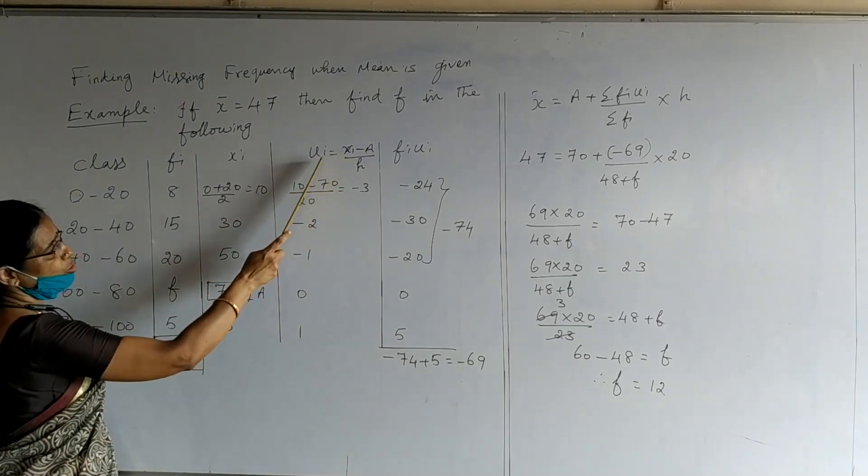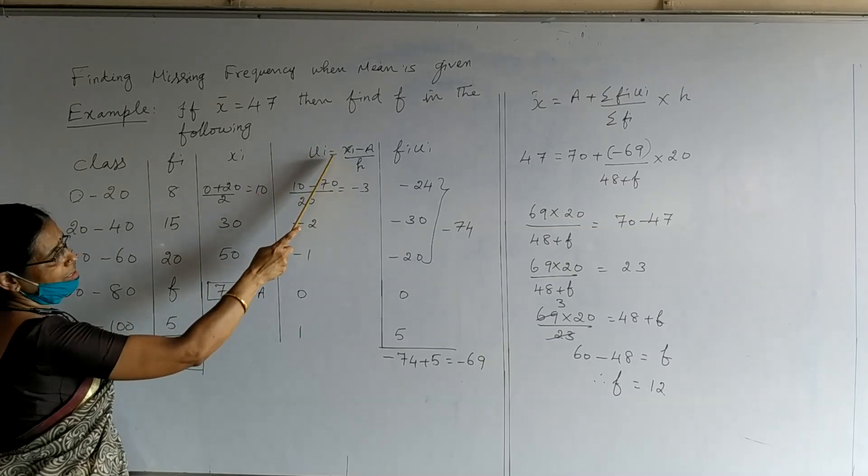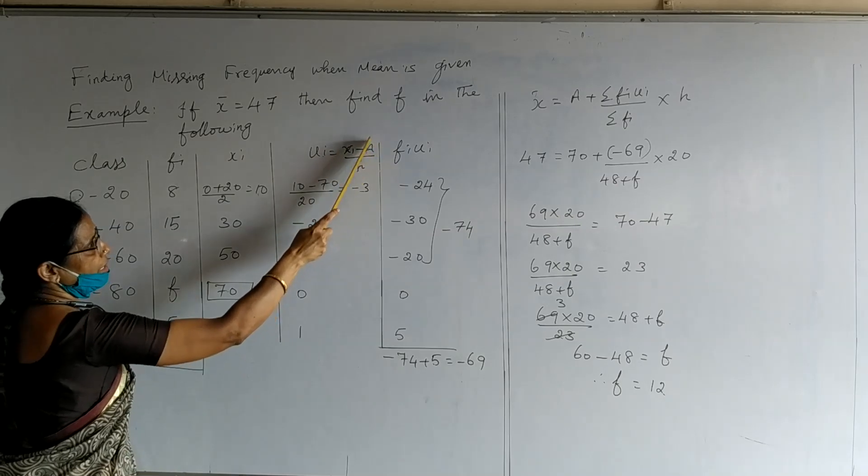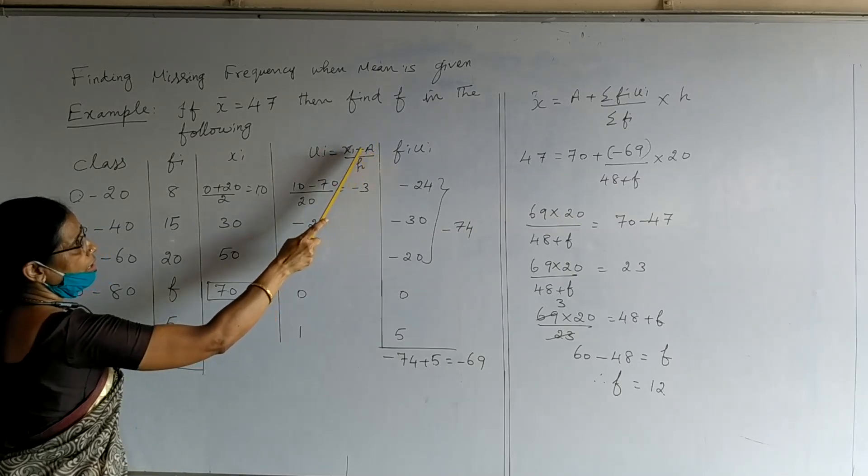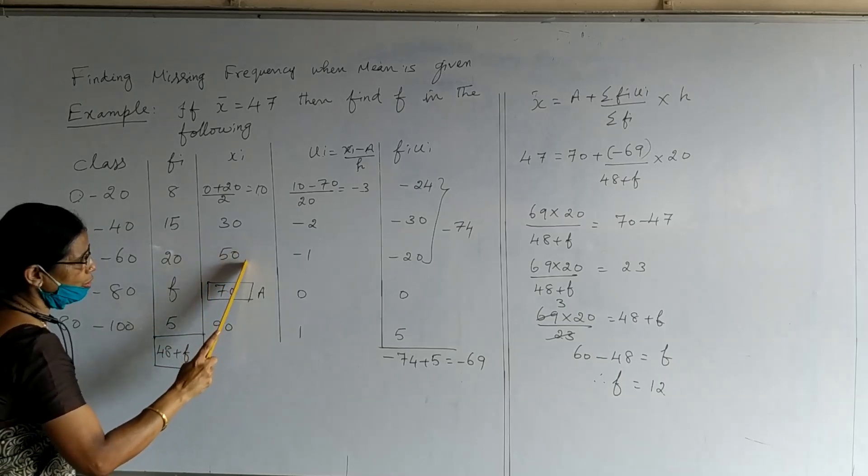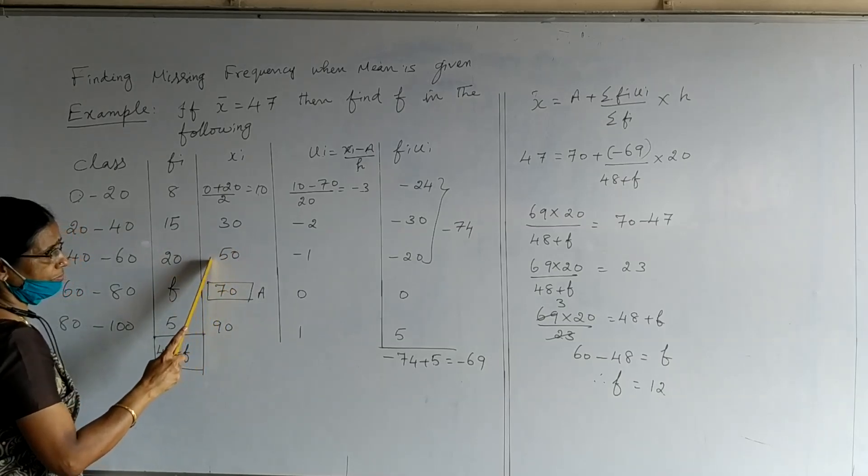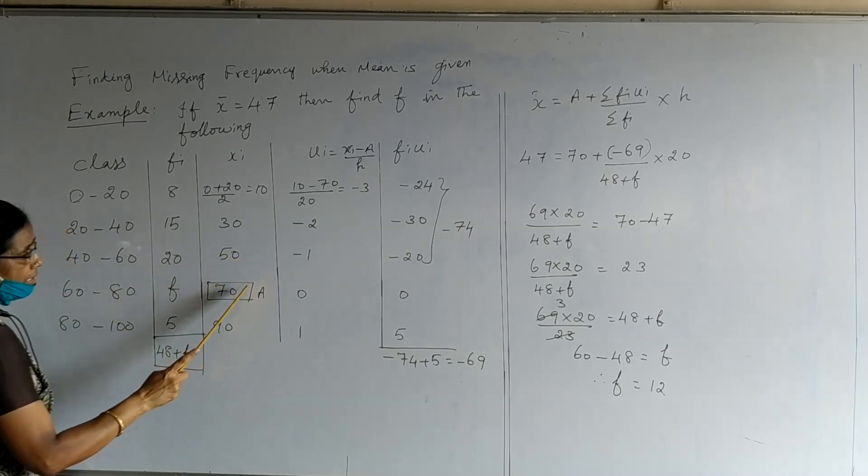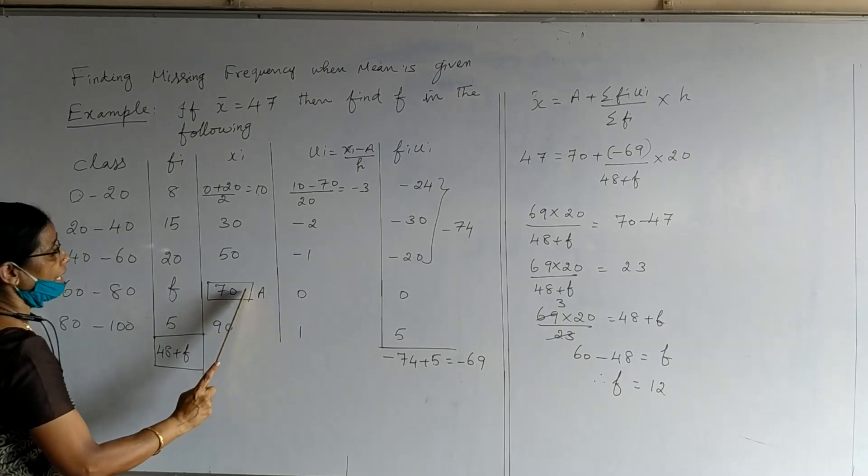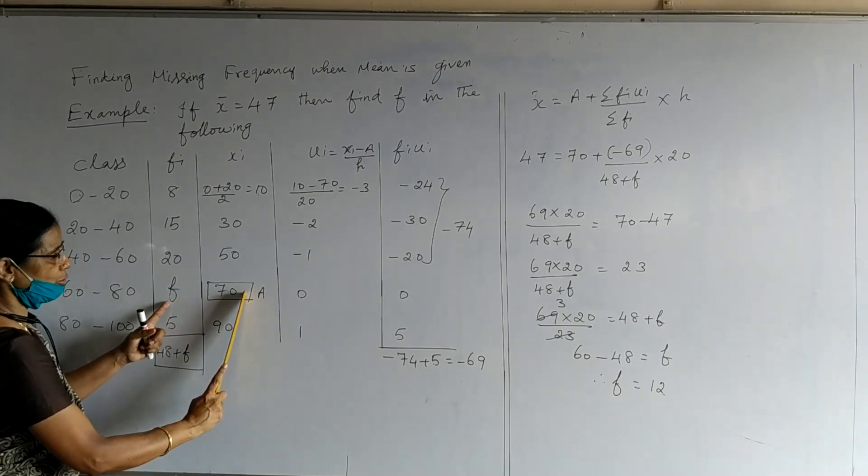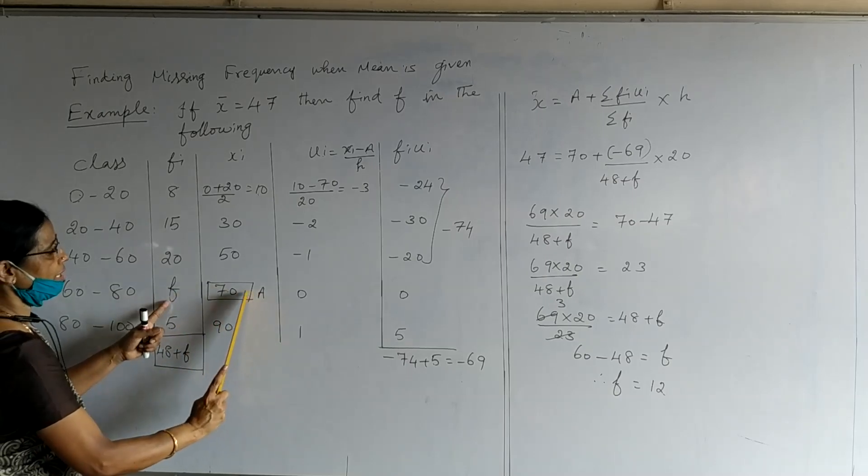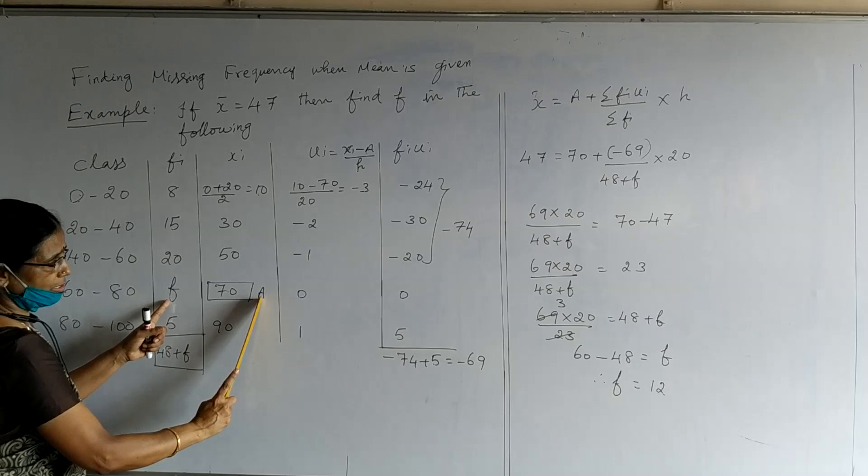I hope you all remember how to calculate ui which was studied in the last class. Marking of ui, usually when mid-values are given, we take the center value as the assumed mean. But here, when frequency is missing, we take xi corresponding to f as the assumed mean. Once again I explain, f is missing here, its corresponding xi should be taken as the assumed mean.